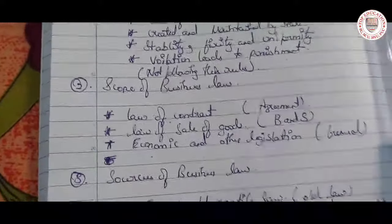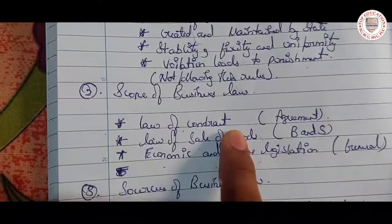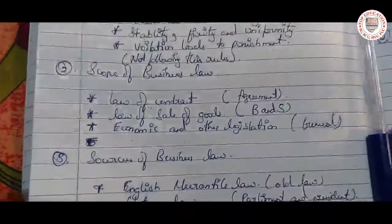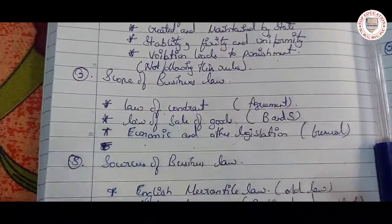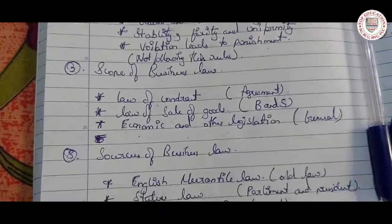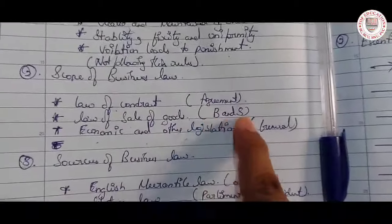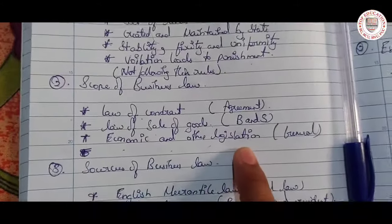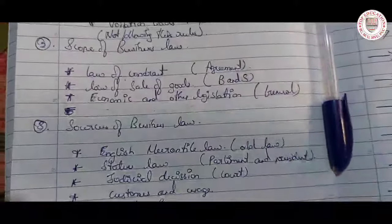Next, let's go to the scope of business law. First is the law of contract — this is an agreement between two or more parties, also known as the law of agreement. Next we have the law of sale of goods — there are certain rules and regulations followed by a business and a seller.